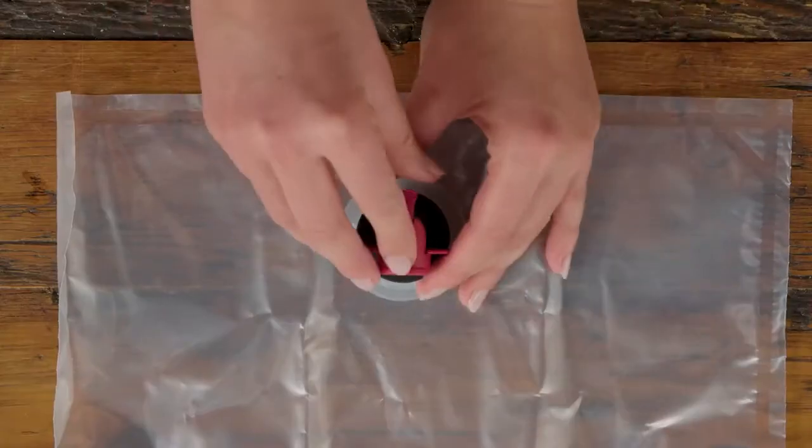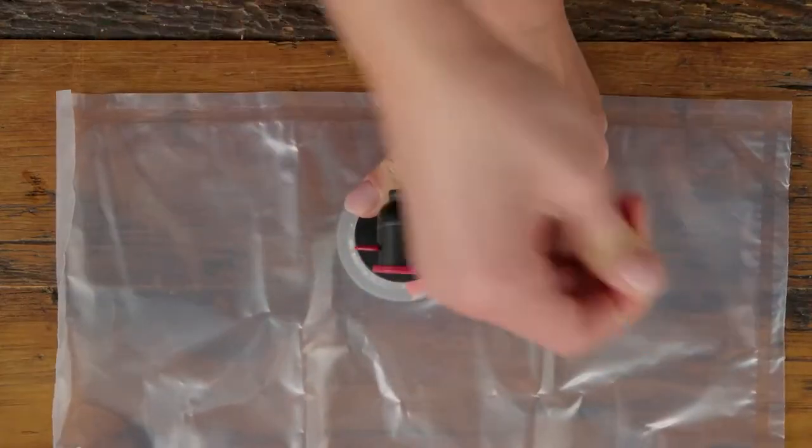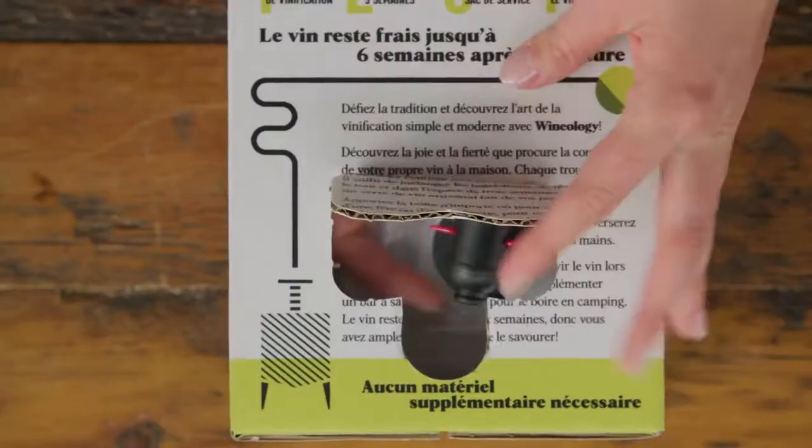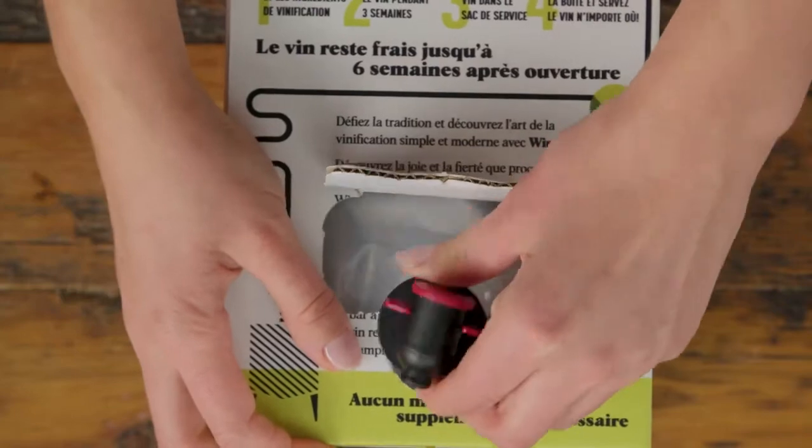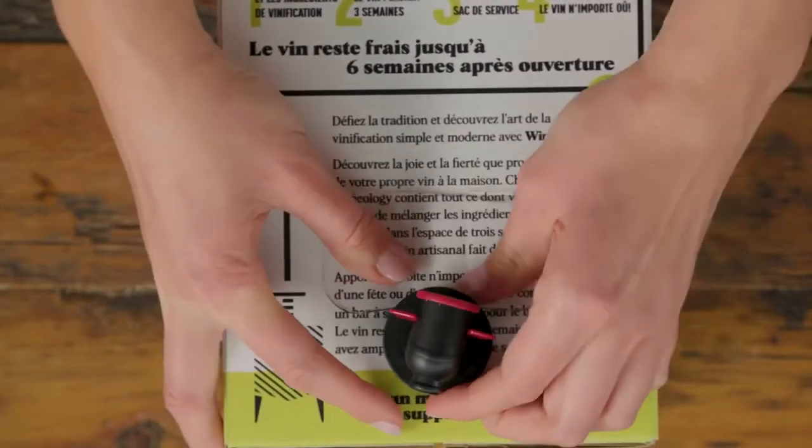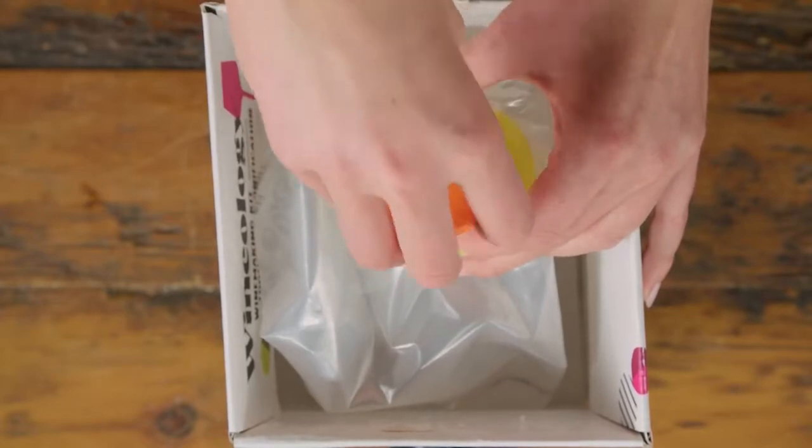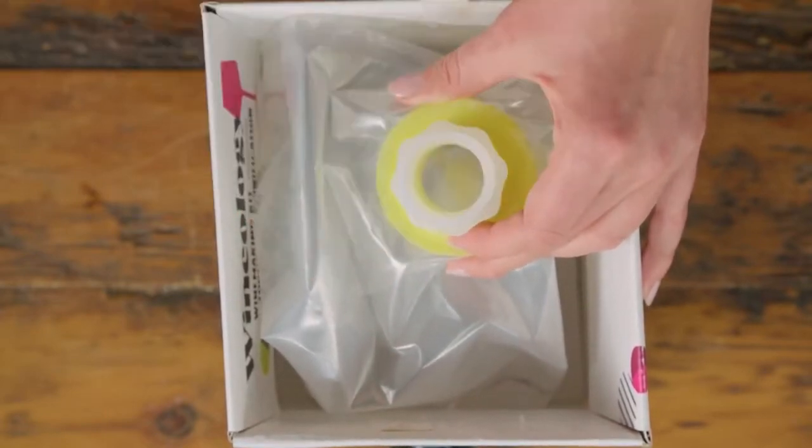Remove the tamper seal from the fermentation bag and snap the spout into place with your thumbs. Lock the spout into place and push the perforated tab in to secure it. Unscrew the cap from the fermentation bag and remove the tamper seal.